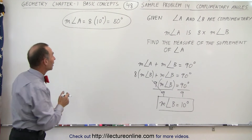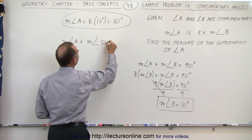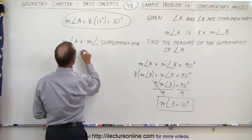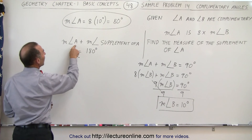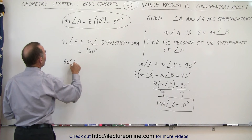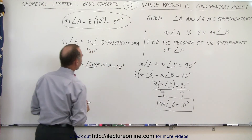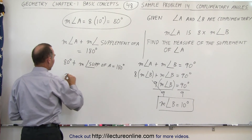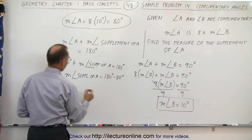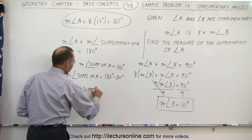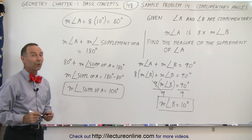Now we're supposed to find the measure of the supplement of angle A, which means that the measure of angle A plus the measure of the supplement of A must equal 180 degrees. I know the measure of angle A is 80 degrees, so 80 degrees plus the measure of the supplement of A equals 180 degrees. Subtracting 80 degrees from both sides, the measure of the supplement of A is equal to 180 minus 80 degrees, which is 100 degrees. And that is the answer we were looking for — that's how it's done.